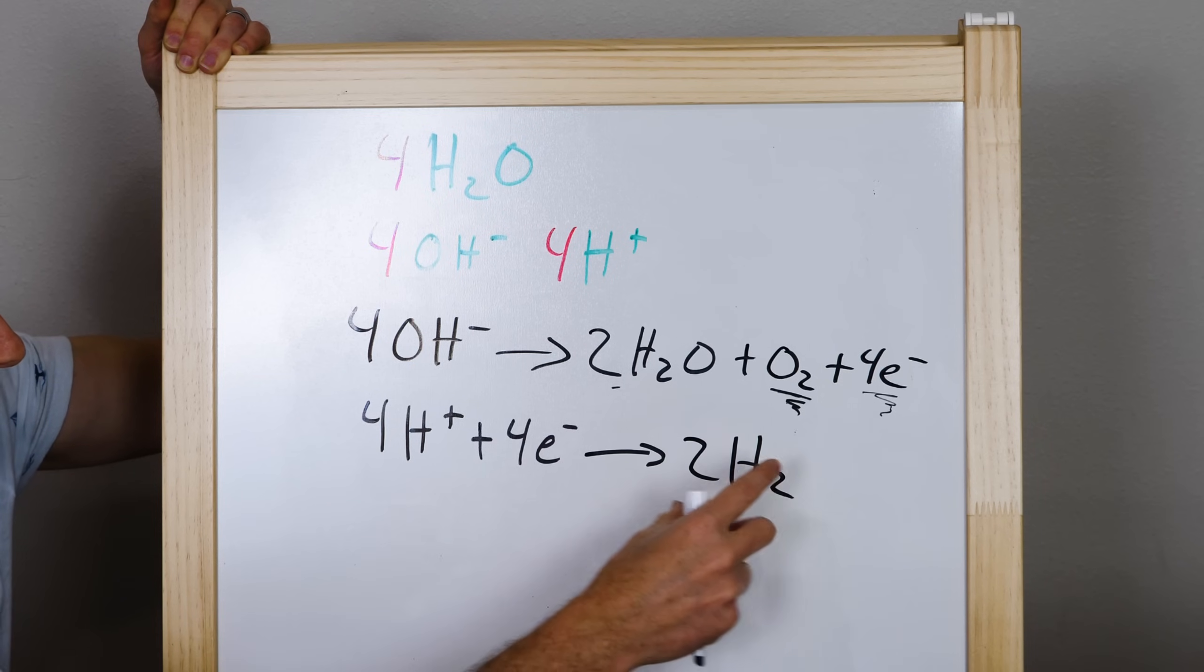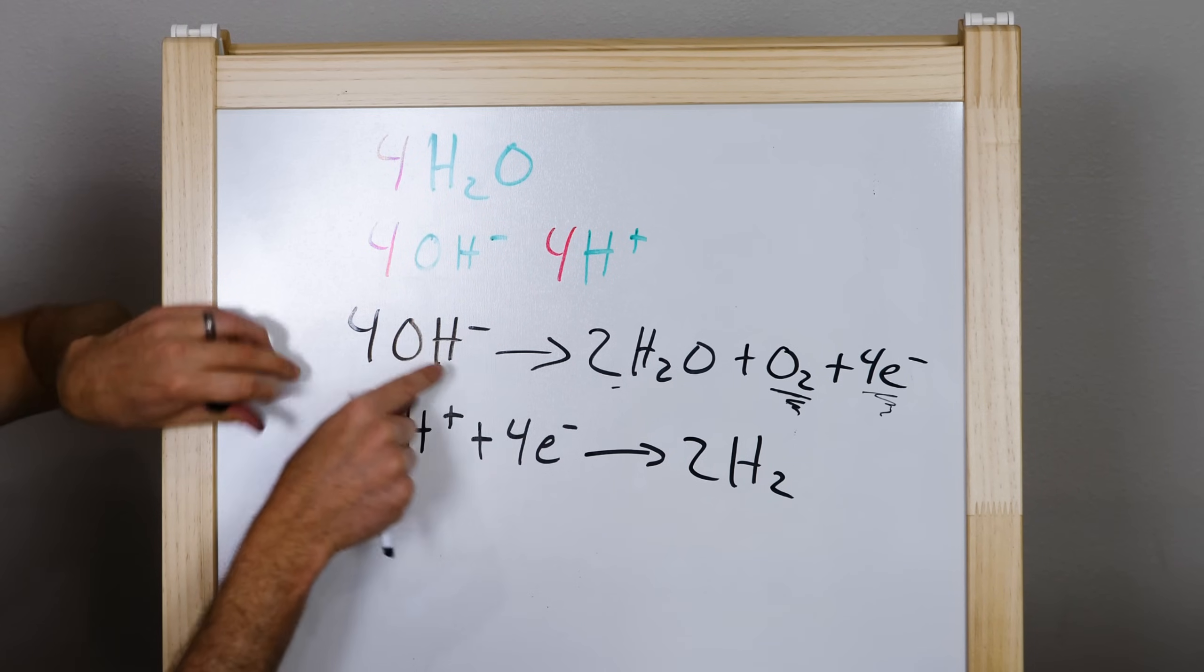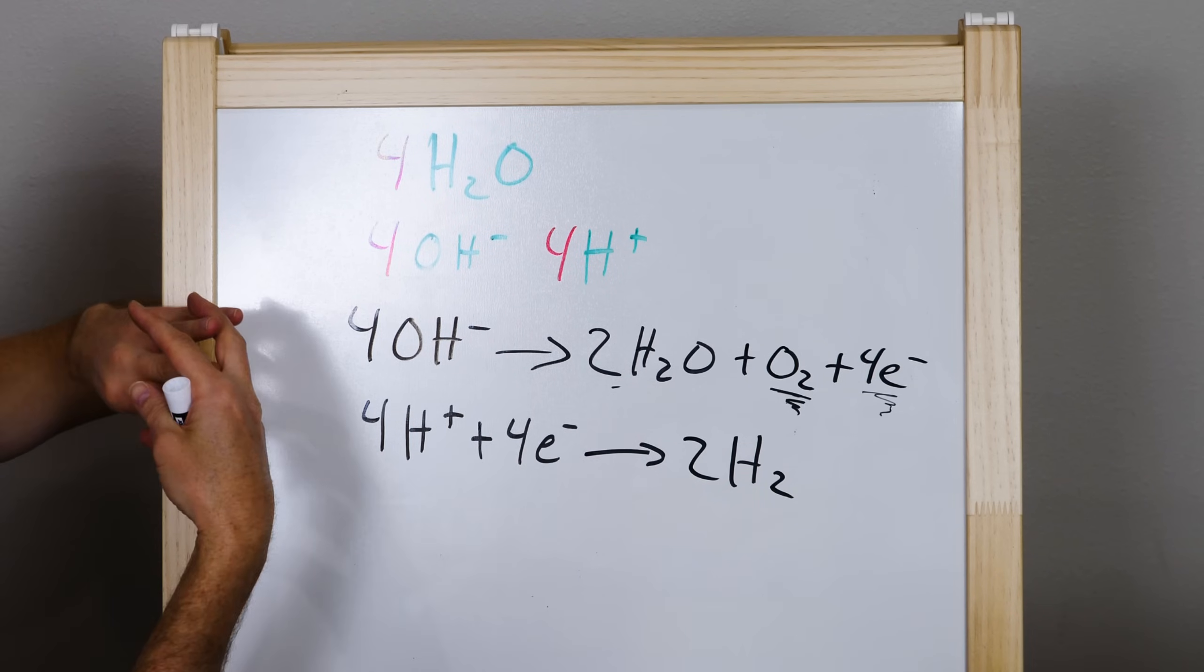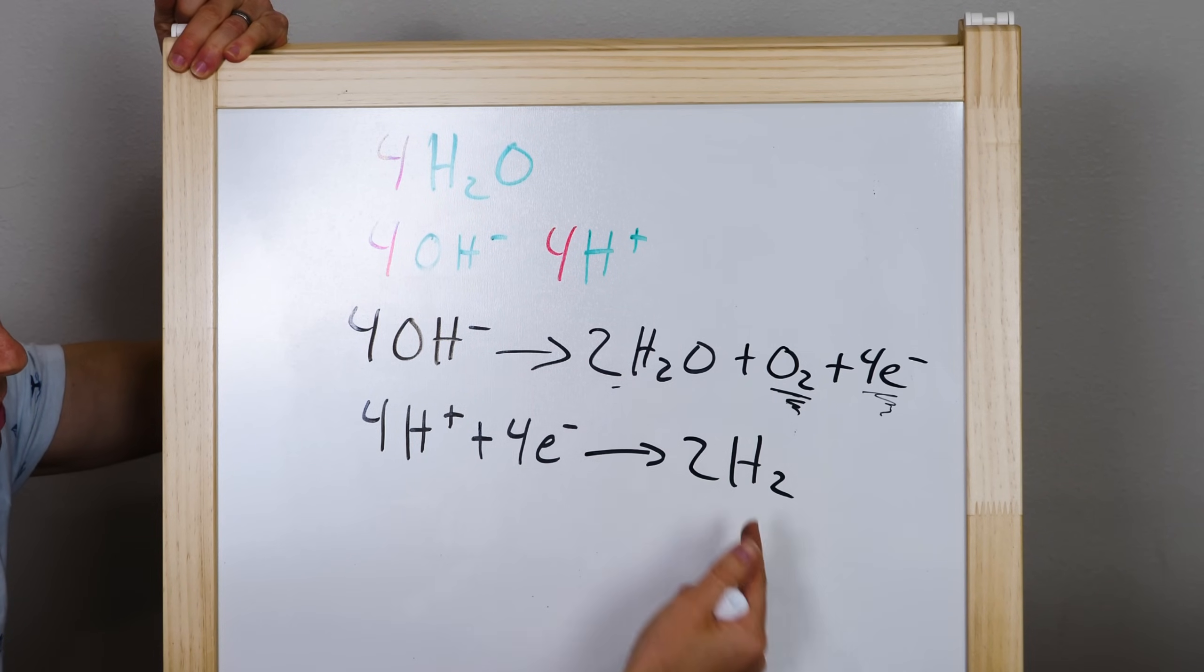So you can see that if we're able to just transfer the electrons from these to these successfully without having them recombine, then we can successfully separate water into just oxygen gas and hydrogen gas that bubble out of the water.